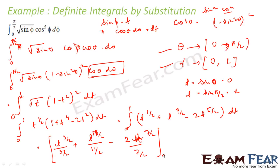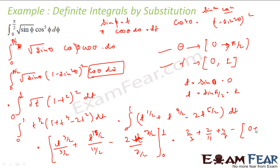I have to find this value from 0 to 1. Putting in the values: t^(3/2)/(3/2) gives 2/3, t^(11/2)/(11/2) gives 2/11, and 2t^(7/2)/(7/2) gives 4/7. At t = 0, everything is 0. So we replaced sin θ with t, also replaced the range from 0 to π/2 to 0 to 1, because when θ varies from 0 to π/2, t varies from 0 to 1.